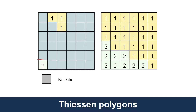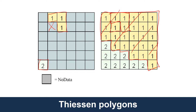In a raster dataset, we have cells that have a value — say a two there and some ones up here. For any given location, it asks which cell that has a value is closest. It turns out in this case that would be this cell over here. Because it's closest to the original data cell, it's assigned the same value. All of the cells in each polygon get that same value. So that would be one polygon, and obviously this would be another. Fairly straightforward.